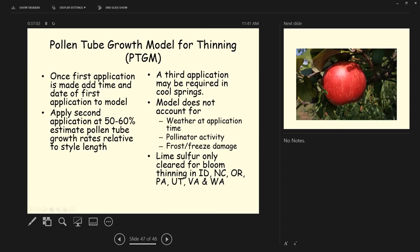Now, the model doesn't account for weather at application time, doesn't account for pollinator activity, and it doesn't account for frost freeze damage. Lime sulfur is only cleared for bloom thinning in Idaho, North Carolina, Oregon, Pennsylvania, Utah, Virginia, West Virginia, and Washington.